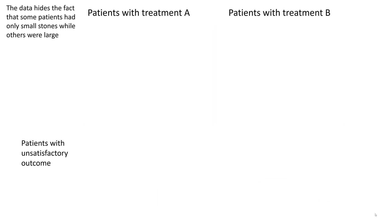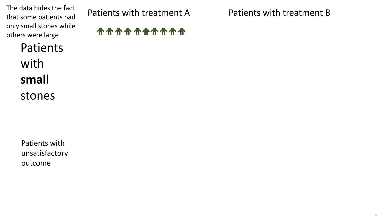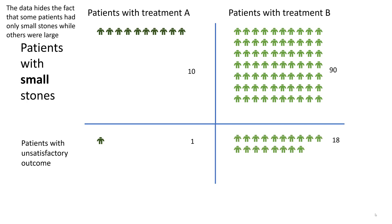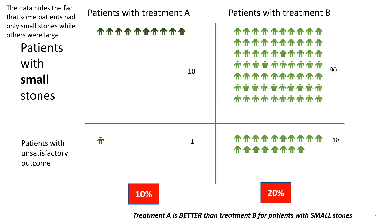Or is it? The problem is that the data hides the fact that some patients had only small stones, while others had large. Looking at those who got treatment A with only small stones — there were just 10 of those — whereas for treatment B, there were 90 with small stones. Of the 10 with treatment A and small stones, only one had an unsatisfactory outcome. For treatment B with small stones, 18 had an unsatisfactory outcome. So the failure rate for treatment A with small stones was 10%, and for treatment B with small stones, 20%. Treatment A is better than treatment B for patients with small stones — exactly the opposite of the overall failure rate.